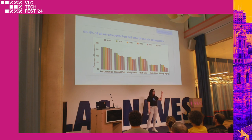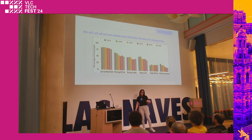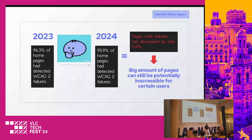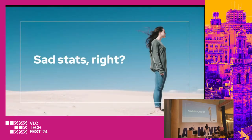Also missing language — the doctype of your page doesn't declare a language, so screen readers and other assistive technologies struggle with it. In 2023, 96.3% of home pages had detected WCAG 2 failures, meaning one million pages had at least one failure. In 2024 that number decreased slightly, but only by 0.4%, which is not enough. The conclusion is these are quite sad stats — almost all websites, unless you specifically address this, are not accessible.